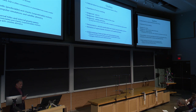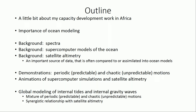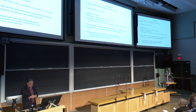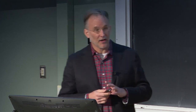Here's an outline of the talk. I'm going to start with a digression and talk a little bit about my outreach passion, which is capacity development work in Africa. Then I'll talk about the importance of ocean modeling in general, and I'll have some background slides — a few concepts important for the talk: spectra, which are used in many fields of physical science, and generally how supercomputer models of the ocean work. Then a very important source of data called satellite altimetry, which is often compared to or assimilated into ocean models. And then demonstrations of periodic or predictable motions, as well as chaotic motions, which are much harder to predict. Part of the point is that if you want to predict chaotic motions, you have a very short time scale over which you can do it.